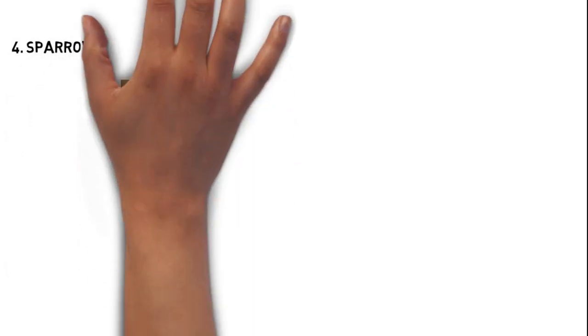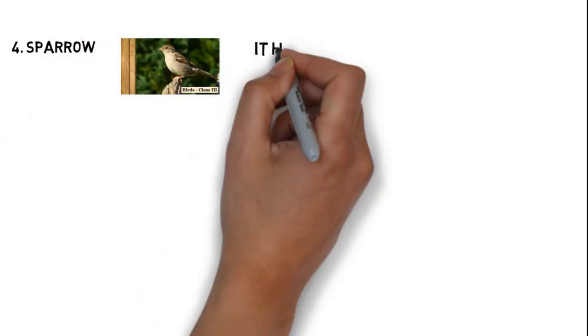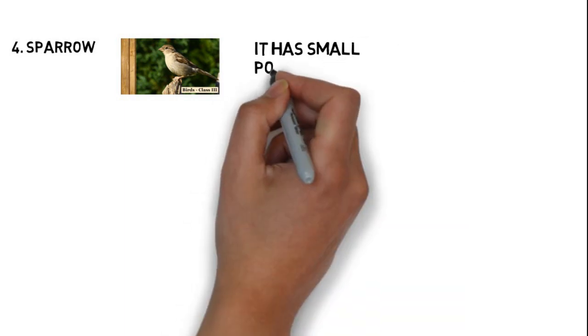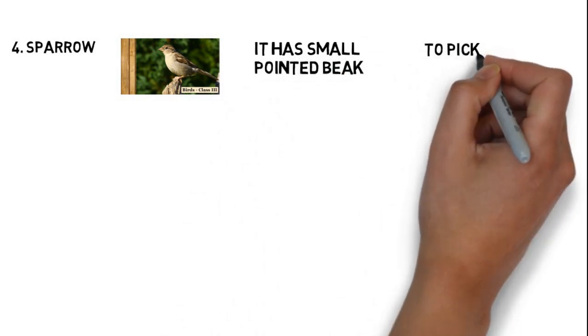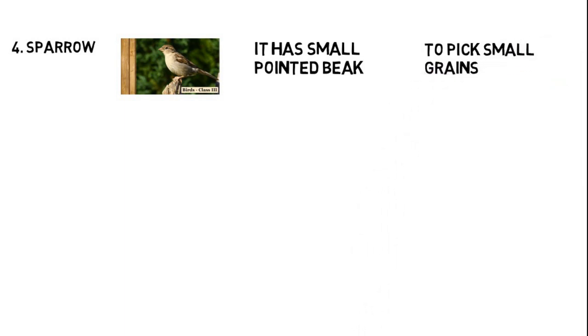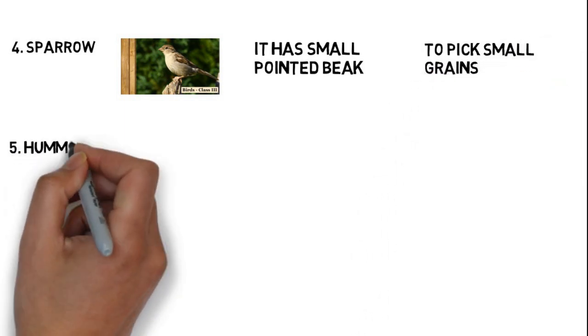Number four, sparrow. Sparrows have small pointed beaks to pick small grains.